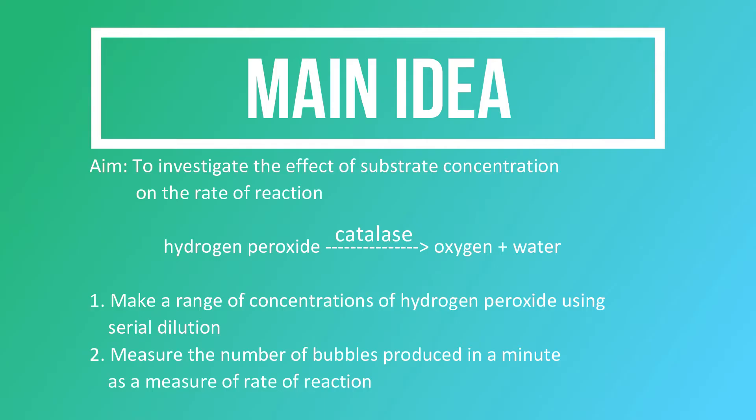The first thing we're going to do is to make a range of concentrations of hydrogen peroxide, which is the substrate, using serial dilution. And then we are going to measure the rate of reaction by measuring the number of bubbles produced in a minute. Bubbles are produced in this reaction because oxygen gas is being formed.